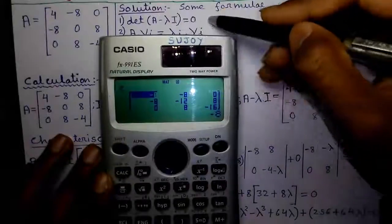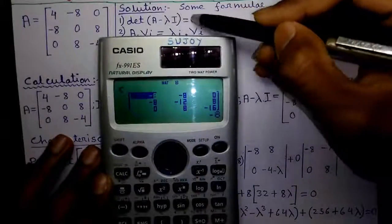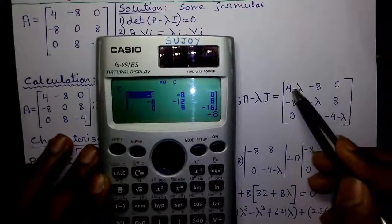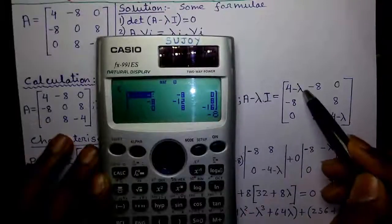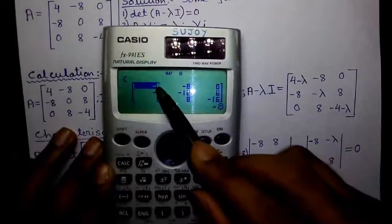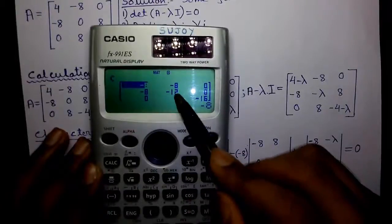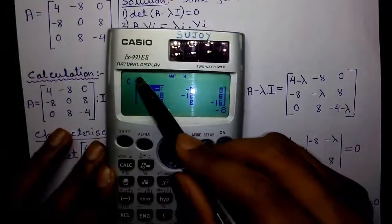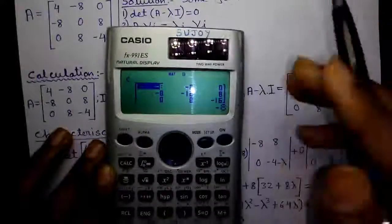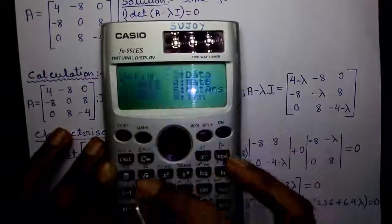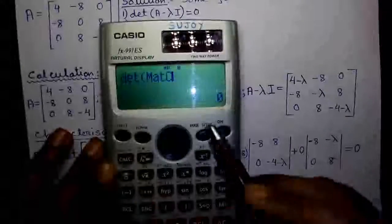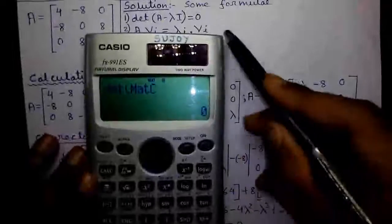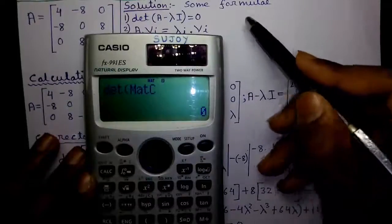Now we will prove formula number 1, which says the determinant of A minus lambda I should be equal to 0. This is the A minus lambda I. Now, if we put lambda equals to 12, we should get this matrix: minus 8, minus 8, 0; minus 8, minus 12, 0; and 0, 8, minus 16. Which is our matrix C. The determinant of matrix C should be equals to 0. Determinant of matrix C is equals to 0. So this is true, and this should be true for all the eigenvalues.